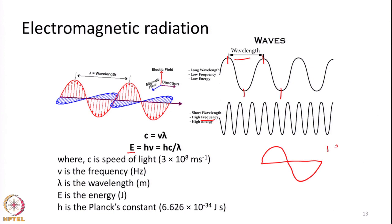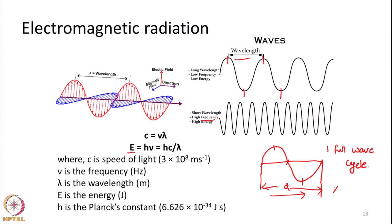This is what we call one full wave cycle. This is the point where the wave starts from the zero position, it reaches a peak, it falls down again to zero position, the amplitude reaches a negative value, then again it comes to zero position. This is how the amplitude of the wave changes, and while the amplitude changes, the wave will progress in one particular direction. The distance covered by the wave before it finishes one full cycle is called the wavelength.